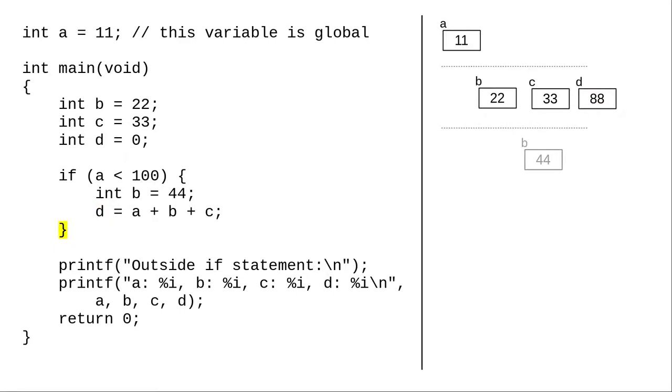When the program encounters the closing brace, the current scope is ended, and any variables declared in that scope go away.